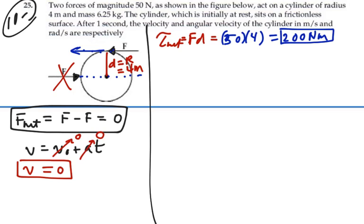All right, if we can find the moment of inertia, we can find the angular acceleration. So our moment of inertia is equal to, for a disc, it's one-half mR squared. So that's going to be one-half times the mass, 6.25, times the radius, 4 squared, and that's going to be 8 times 6.25, which is 50 kilogram meters squared.